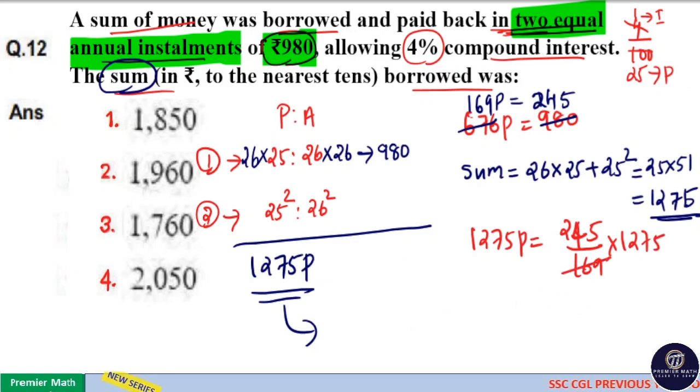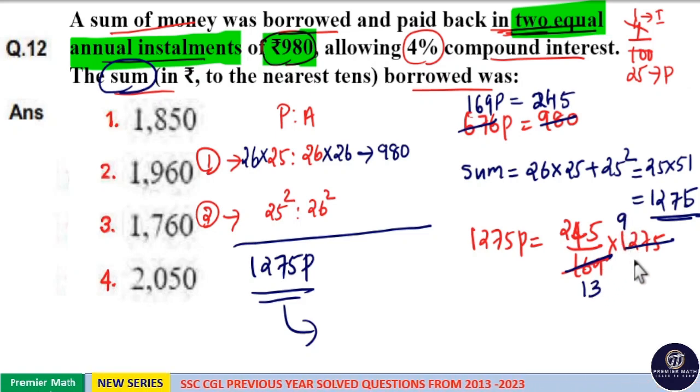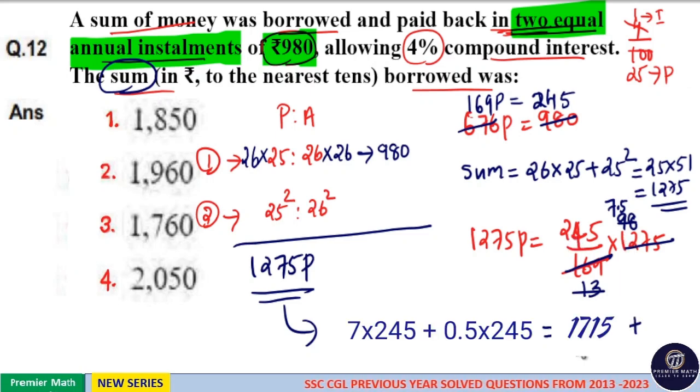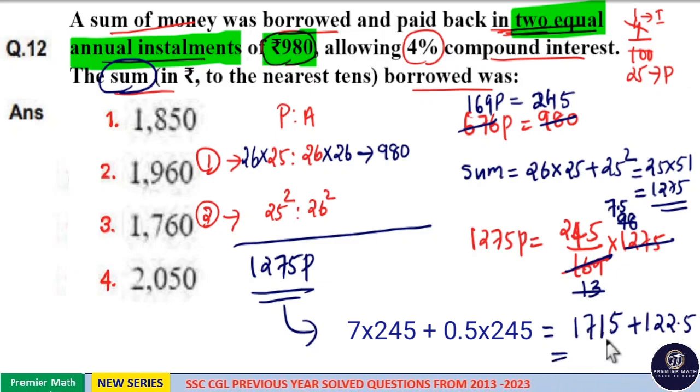Here 13 goes 13 times in 169 and 13 goes around, 13 into 10 is 130. So 13 into 9 is 117 remaining 10. So 13 into around 8 is equal to 105. So here again if I cancel 13 with 13, 13 into 7 is 117. So 13 goes around 7.5 times in 98. Now 7.5 into 245 is equal to 1715 plus 122.5. Now this is around 1800. So nearly 1800 which is equal to option 1.